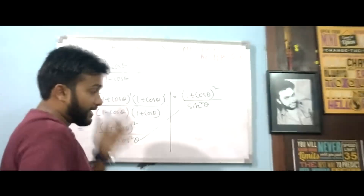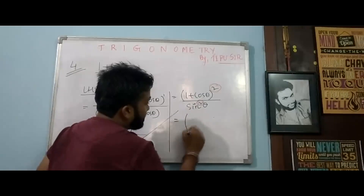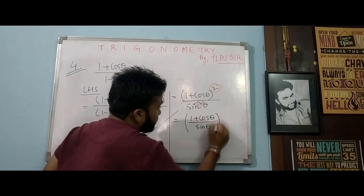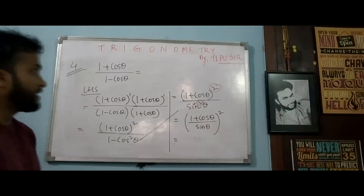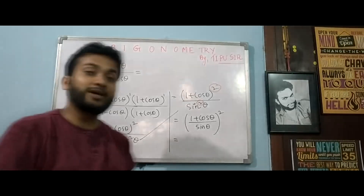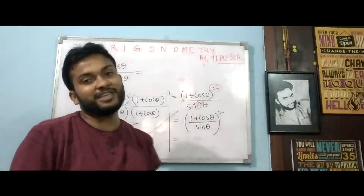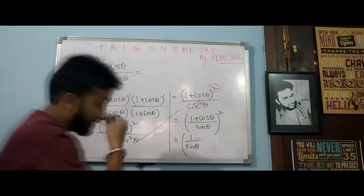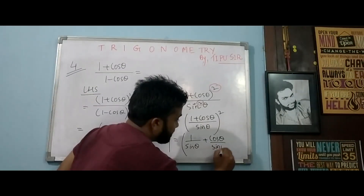We can see it is (1 + cos theta)² / sin²θ — both are perfect squares. So we can write this as [(1 + cos theta) / sin theta] whole square. The square root and the whole square cancel, giving (1 + cos theta) / sin theta, which we can split as 1/sin theta plus cos/sin theta, i.e., cosec theta plus cot theta.